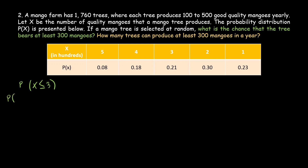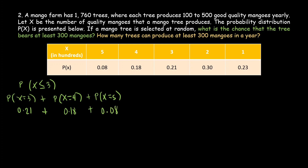So we calculate: P(X = 3) + P(X = 4) + P(X = 5). P(X = 3) is 0.21, P(X = 4) is 0.18, and P(X = 5) is 0.08. If you sum all of them, the answer is 0.47. So the chance that the tree bears at least 300 mangoes is 0.47.